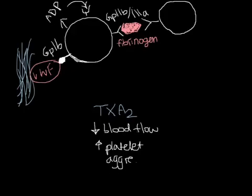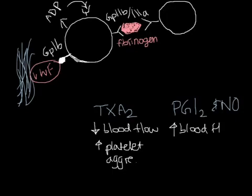At the same time, the endothelium will release prostaglandin I2, PGI2 and nitric oxide. These do the opposite of thromboxane A2. These are anti-aggregation factors. So they will up-regulate blood flow and down-regulate platelet aggregation.